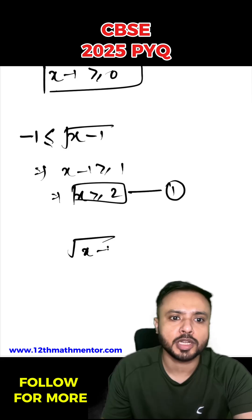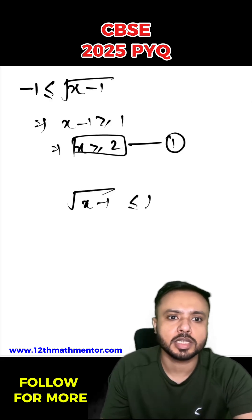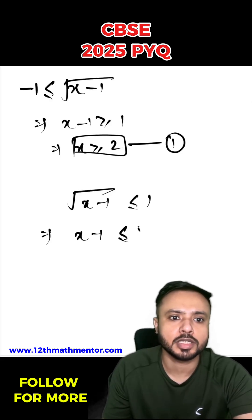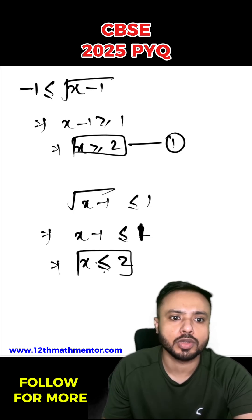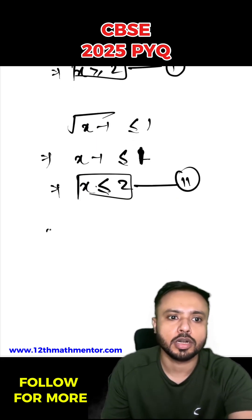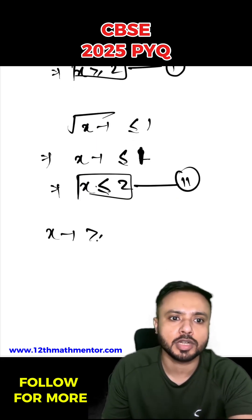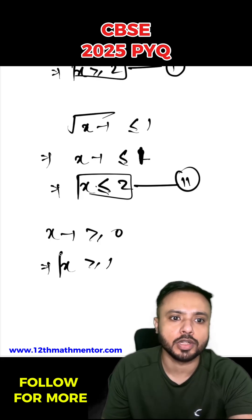For the second inequality: √(x-1) ≤ 1, which means x-1 ≤ 1, so x ≤ 2. That is our second inequality solution. The third inequality is x-1 ≥ 0, so x ≥ 1. That is our third inequality solution.